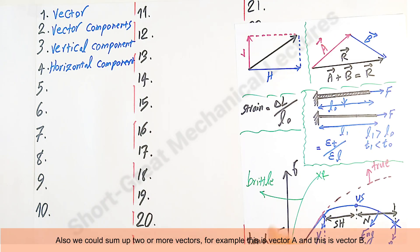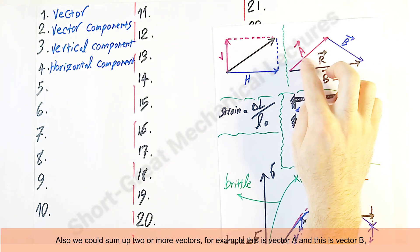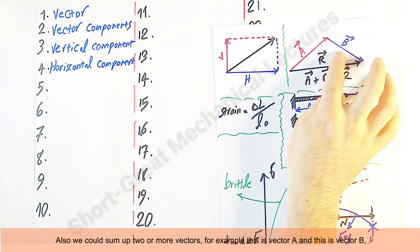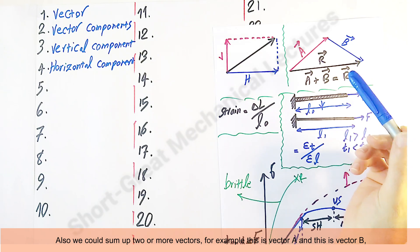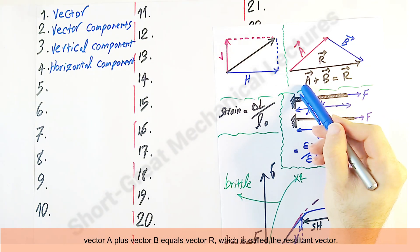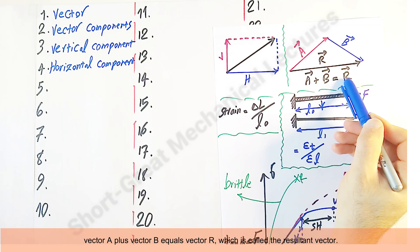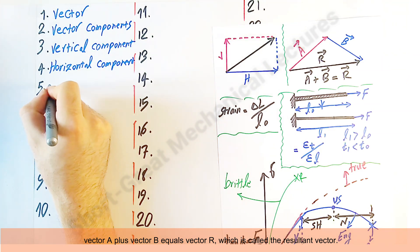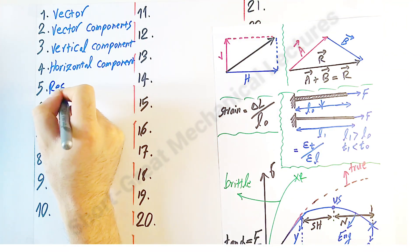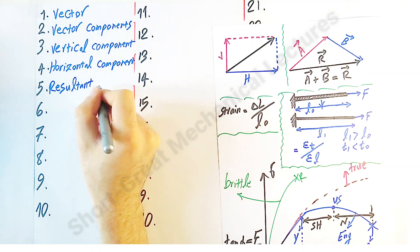Also, we could sum up two or more vectors. For example, this is vector A and this is vector B. Vector A plus vector B equals vector R, which is called the 'resultant vector.'